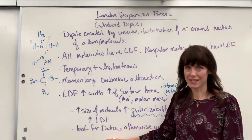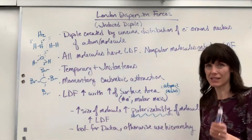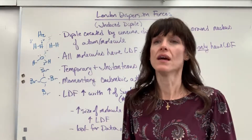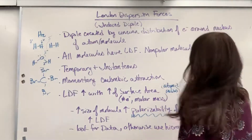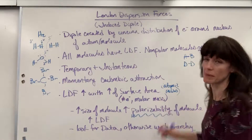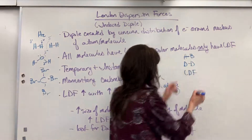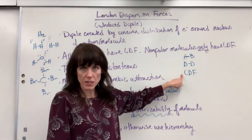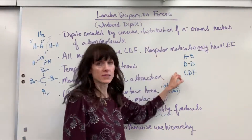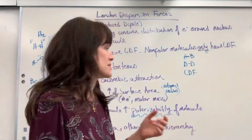Look for data — you need to be given data on this. If you're not given data, always follow the hierarchy of intermolecular forces. Hydrogen bonding is always number one. Then you have dipole-dipole — HB is hydrogen bonding, DD is dipole-dipole — and then you have London dispersion forces. Strongest down to weakest. If you're ranking the intermolecular forces of molecules, follow this hierarchy. The only time you won't follow it is if you are given some data.